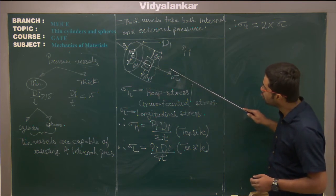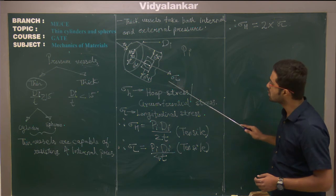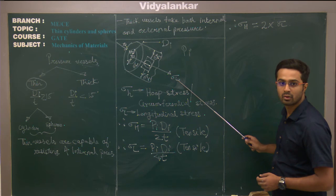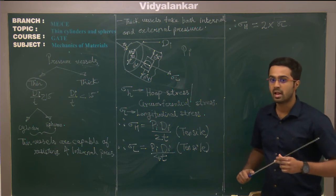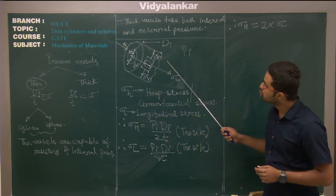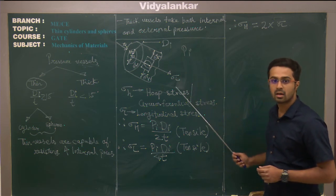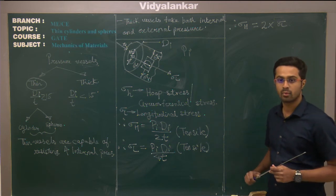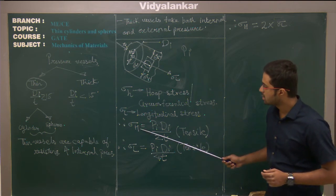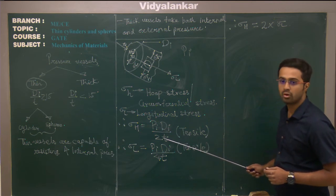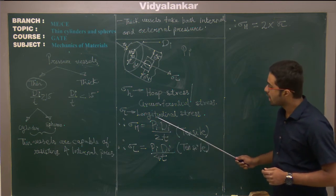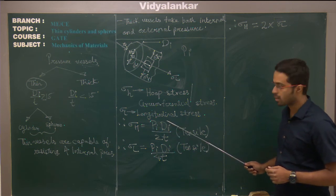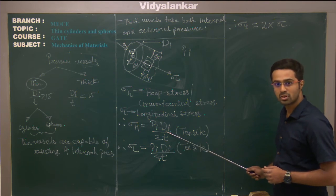The stress which acts along the longitudinal axis of the cylinder is known as longitudinal stress, given by sigma l. So on a thin cylinder, you get two normal stresses: one is hoop stress and the other is longitudinal stress. The equation for hoop stress is: sigma h = pi × di / (2t), where pi is the internal pressure, di is the internal diameter, and t is the thickness of the pressure vessel.